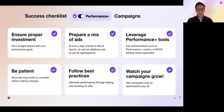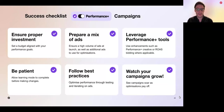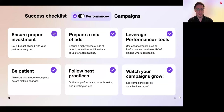Let's bring it all together with a six-item success checklist for your Performance Plus campaigns. Number one, ensure proper investment — set a budget aligned with your Performance Plus goals. Secondly, prepare a mix of creatives — ensure a high volume of ads at launch and additional ads for subsequent optimizations. Thirdly, leverage Performance Plus tools — use enhancements like Performance Plus Creative or Performance Plus ROAS bidding. Then, most importantly, be patient — allow learning mode to complete before making changes. Follow best practices: optimize performance through testing and iterating. And of course, watch your campaigns grow as those optimizations pay off.